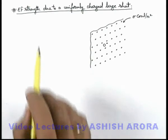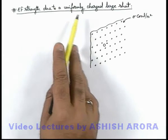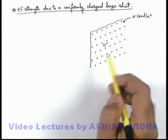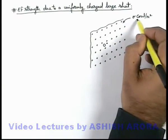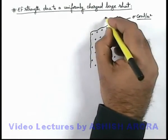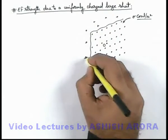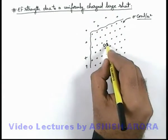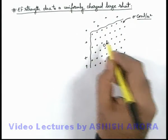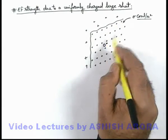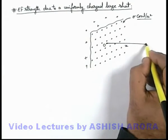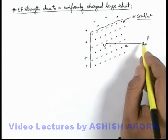Dear students, let's discuss the electric field strength due to a uniformly charged large sheet. This figure shows a very large sheet which is uniformly charged with a surface charge density sigma coulombs per meter square. Although due to limitation of space we have drawn the boundaries, you can treat it as an infinitely large sheet. In front of it, say there is a point O which can be treated as the centre of this sheet — every point can be regarded as a centre if it is infinitely large. At a distance x in front of O, there is a point P where we wish to calculate the electric field strength.